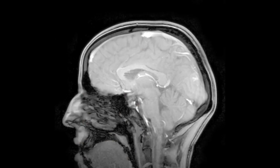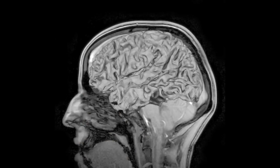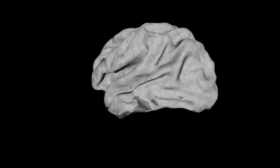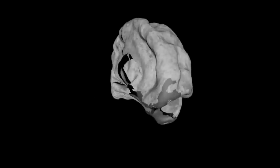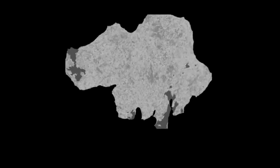The first step is to take a high-resolution anatomical MRI of each subject's brain. Then we use this image to construct a 3D model of the cortical surface. Then we flatten out the cortical surface so that we can see the entire cortex at the same time.